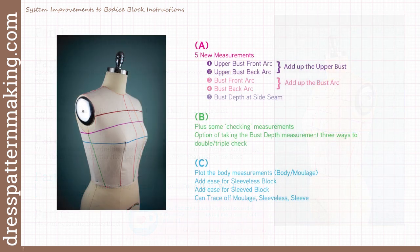So there are five new measurements in my new system: the upper bust arc front, upper bust arc back, bust arc front, bust arc back, and the bust depth at the side seam. Plus I'll be including some checking measurements.